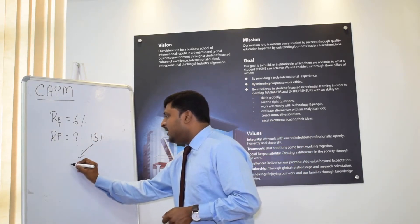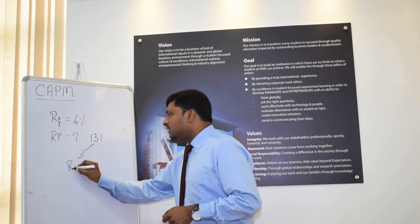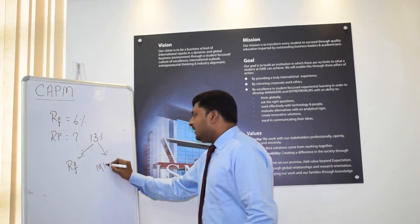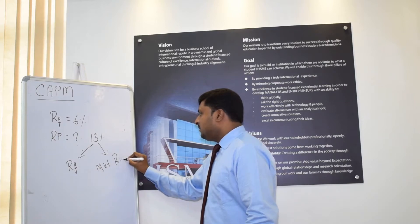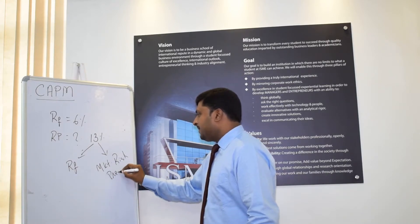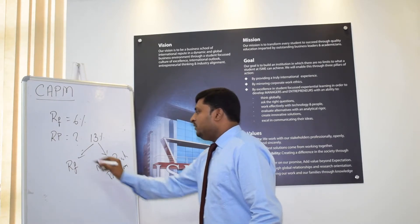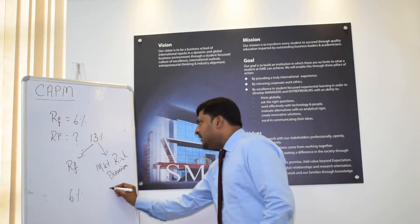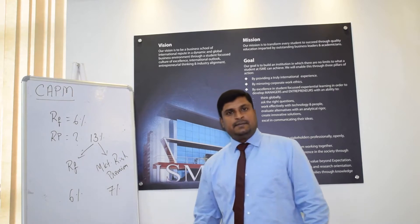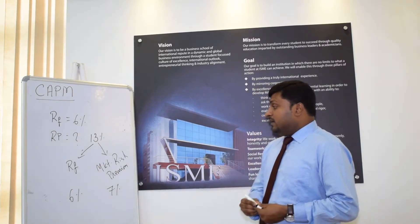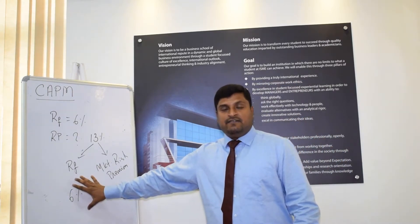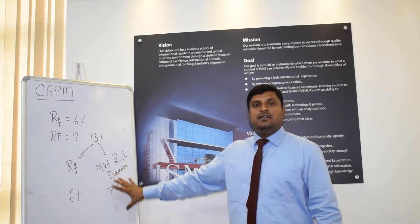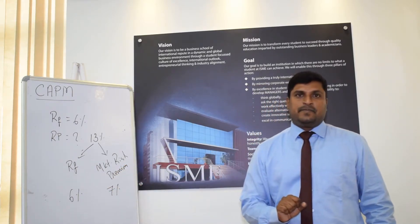This is what CAPM does — it divides this 30% into two parts. One part is your risk-free return, whereas the other part is your market risk premium. Your risk-free rate you already know is 6%, which means the market risk premium must be 7%. Risk-free rate of return can be earned by anyone, whereas market risk premium is earned when you invest in the market.